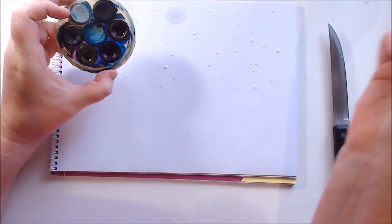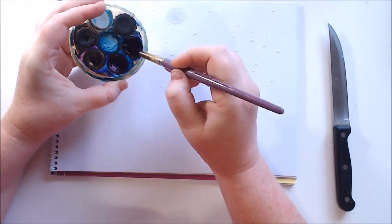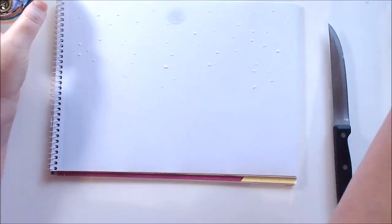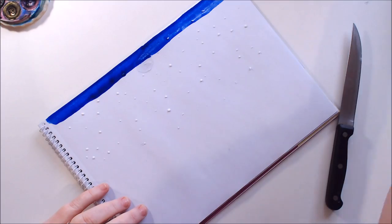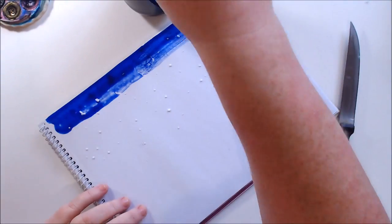Now let it dry for a bit or use a hair dryer on cold to dry off the little dots before you paint. And grab yourself some nice dark blue like I'm doing here and I'm going to be making a starry sky.